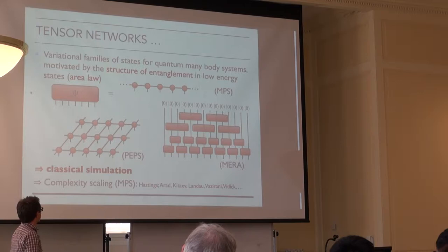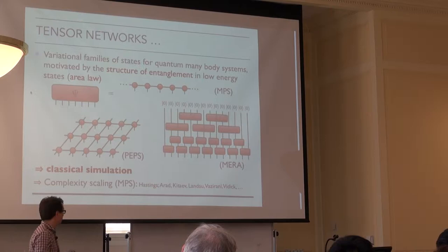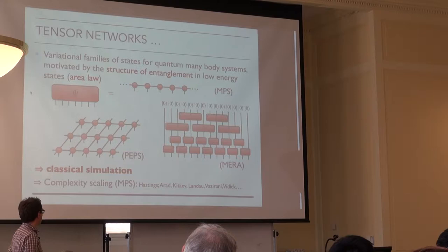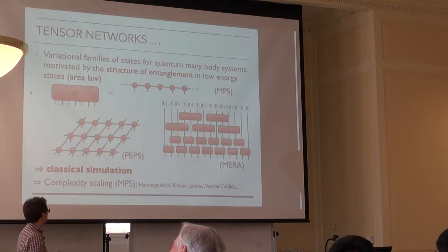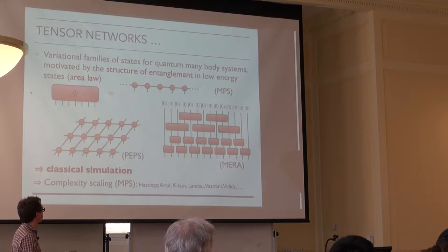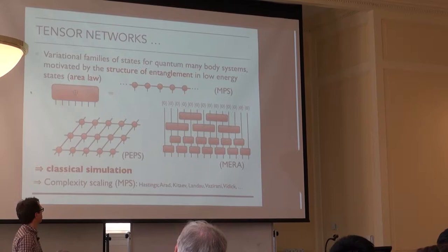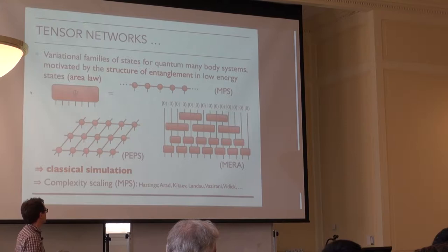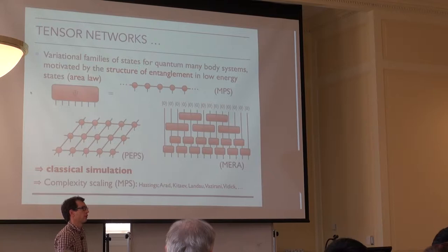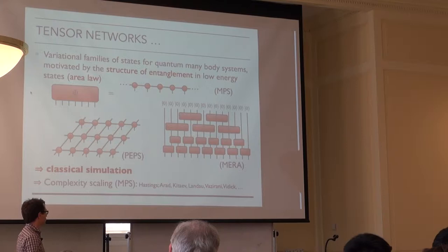These are used for classical simulation, putting things on current-day classical computers. They can also be used to bound classical complexity scaling. The first result in that direction was Hastings, who proved that for one-dimensional systems with a gap, representing the quantum state up to a certain error with an MPS requires only polynomial scaling in the bond dimension — these virtual indices representing the entanglement degrees of freedom. This work was more recently refined by Arad, Kitaev, Landau, Vazirani, and Vidick.